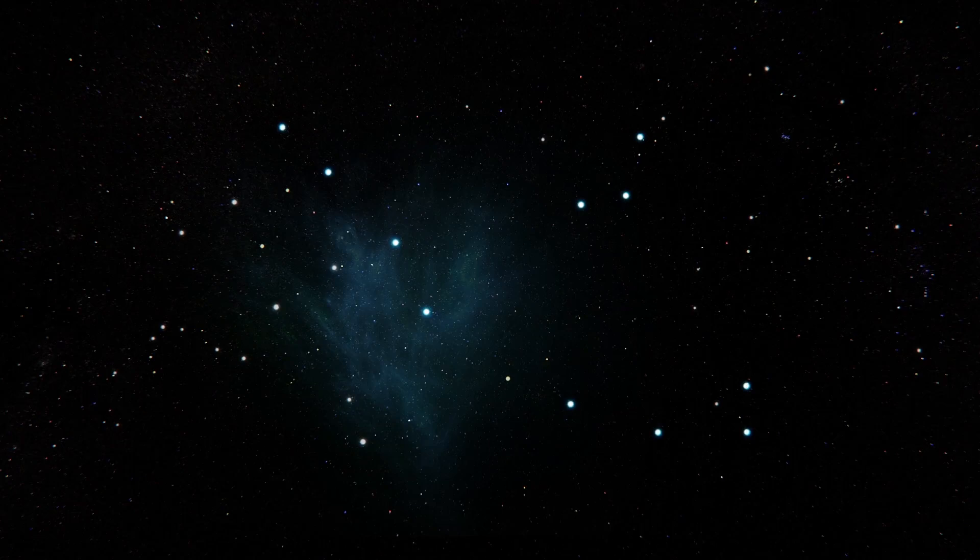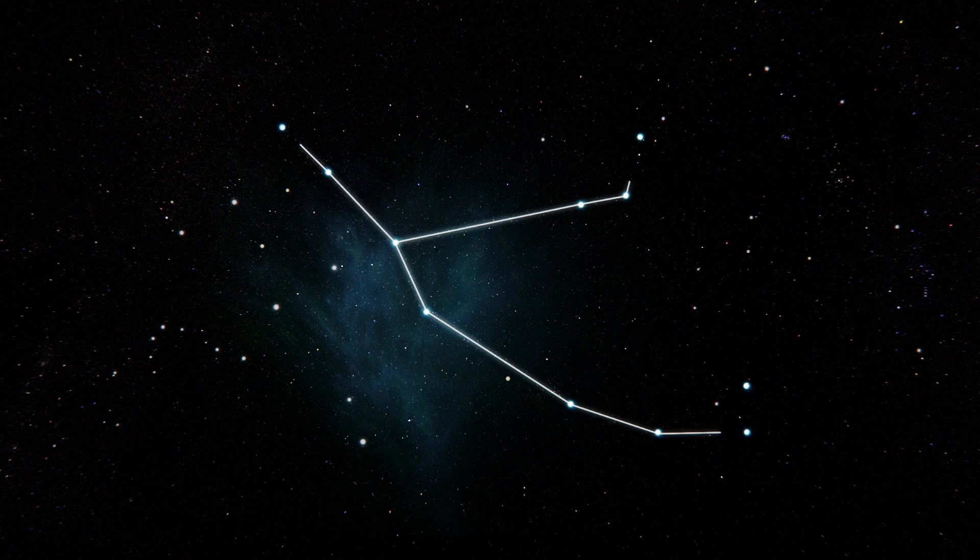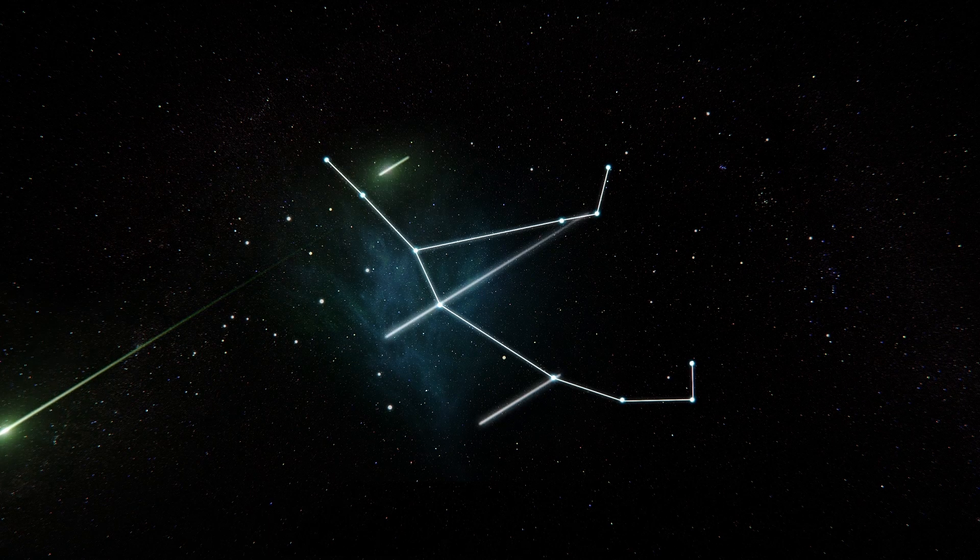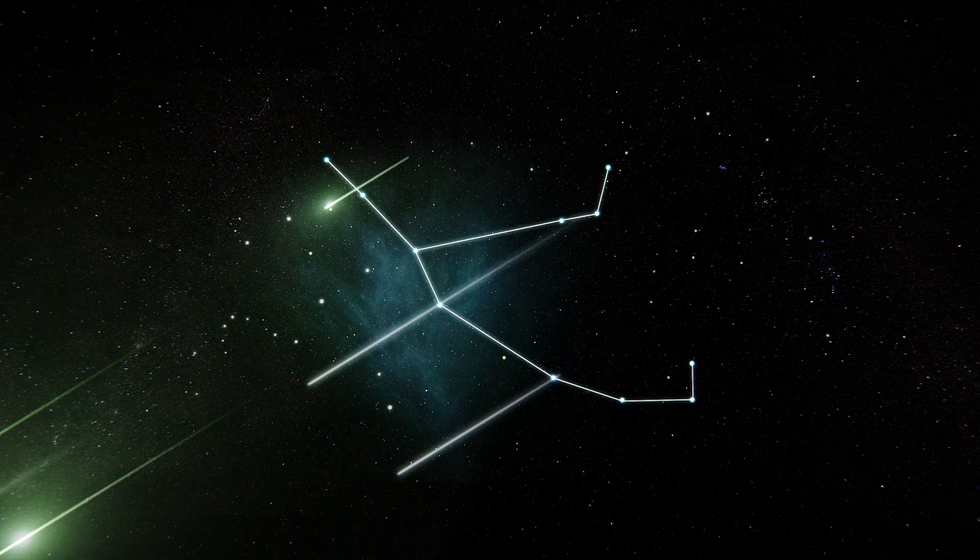Perseids are meteor showers that appear to come out of the constellation Perseus every August. According to National Geographic, the Perseid meteor showers can feature an average of between 60 to 100 shooting stars in the peak hour.